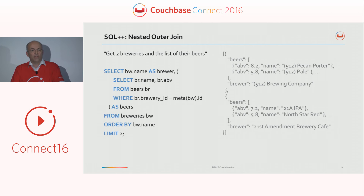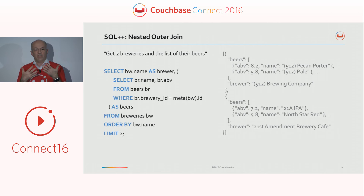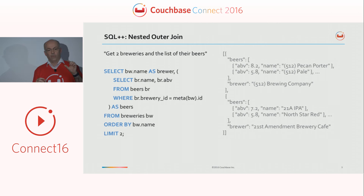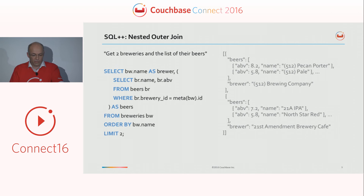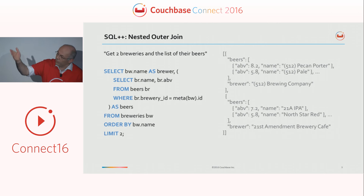Now we get to something you wouldn't see in standard SQL because the result here has nested data. We want to get two breweries and their beers, but this time the beers are nested in the result — for each brewery, we construct an array of beers nested in that result. The query is relatively simple: you select the brewery and then have a short subquery that takes the beers for this brewery and puts them as an array into the result. That nested query gets translated into a join, which can then be efficiently evaluated.